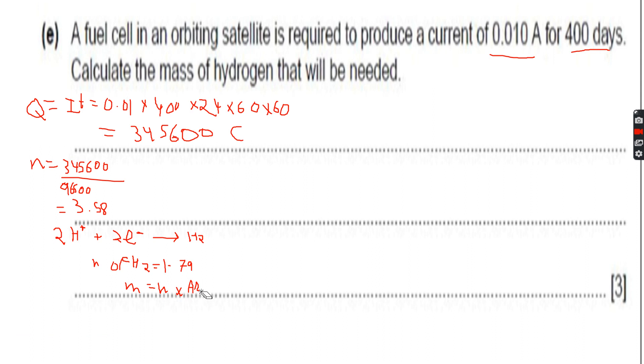So n into Mr, and the molecular mass is 1 plus 1, because 2 hydrogen atoms, so 2. Therefore, 1.79 multiplied by 2 equals 3.58 grams of hydrogen gas. Now we are done with this question.